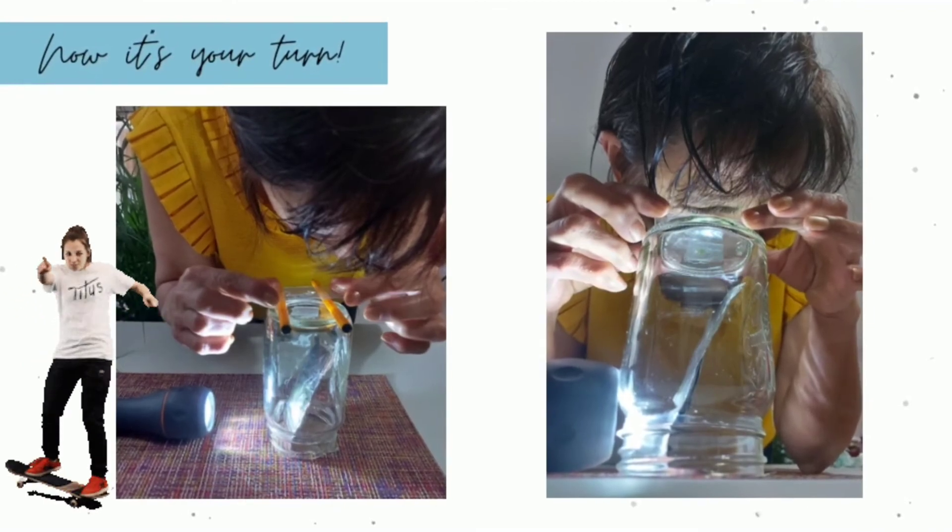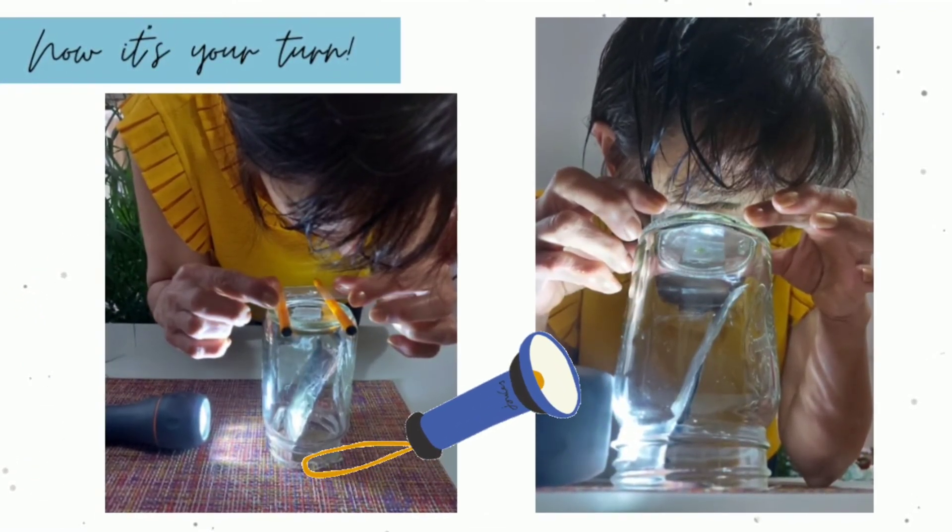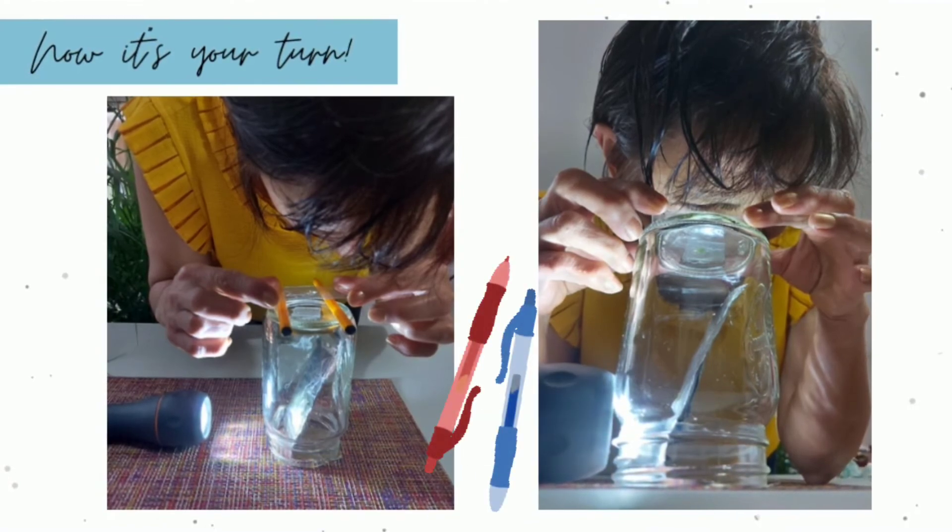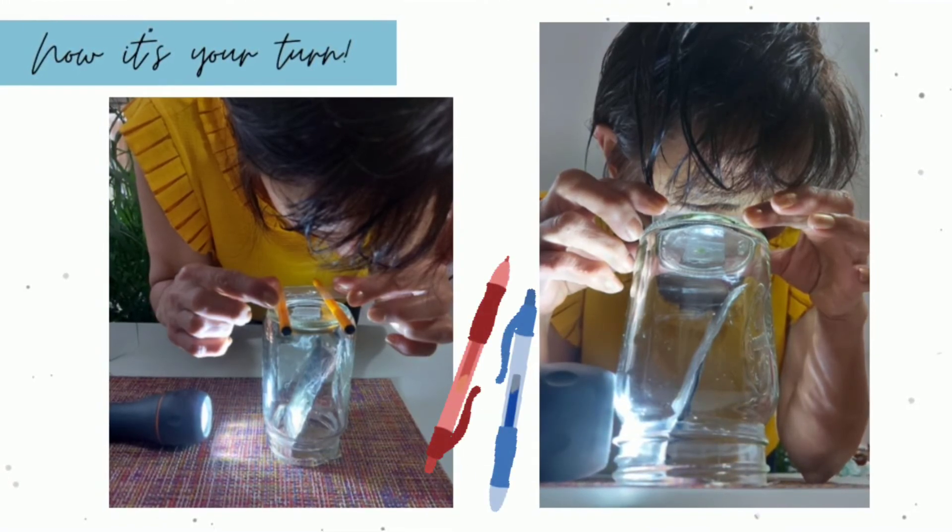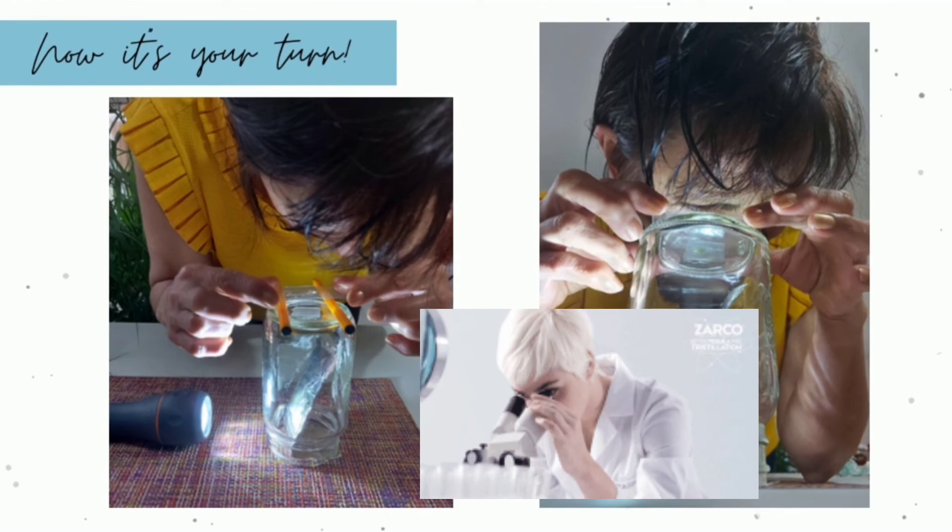Now is your turn. Turn on the flashlight and if you want, you can put two pens under the sample to support the lens holder. The pens help you to give a good height over the sample to get the best focus.